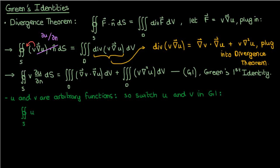So instead of making my capital F equal to v del u in the divergence theorem, I could, for example, make it equal to u del v. And if I do this little switch, the result is a modified version of Green's first identity, which I'll call equation g1 star.